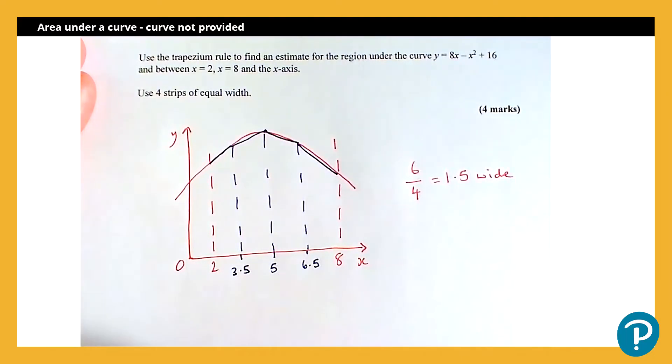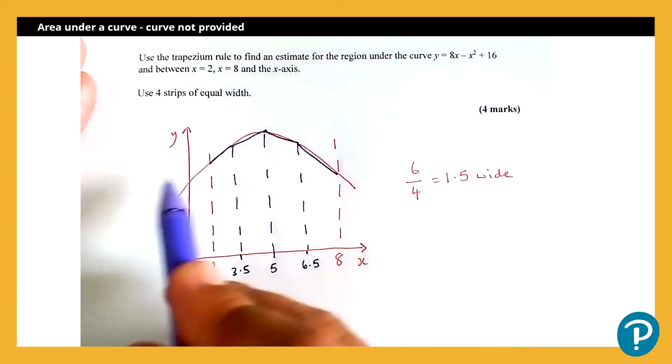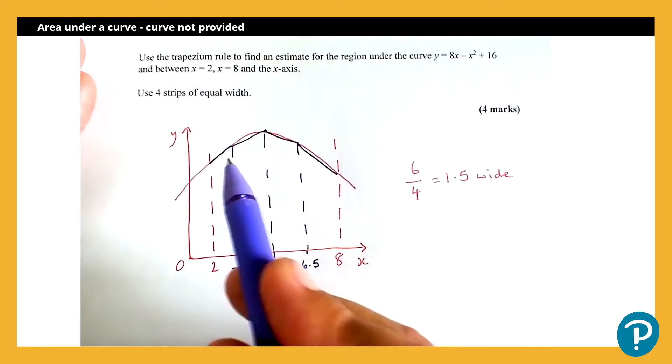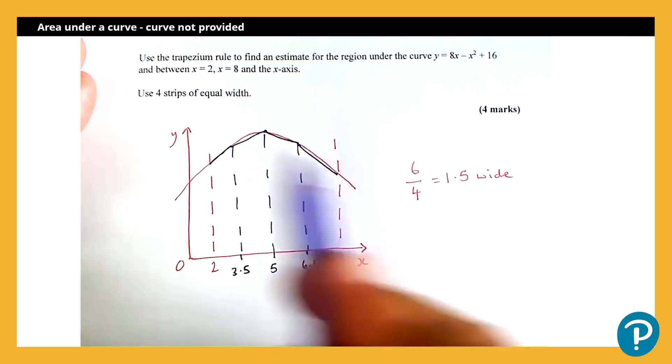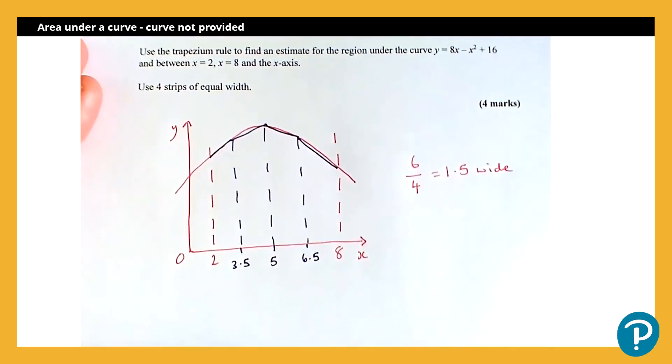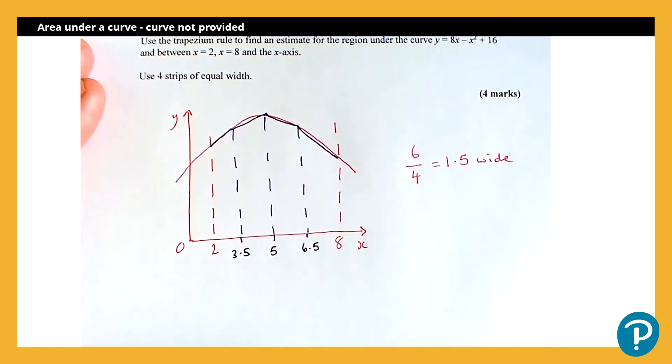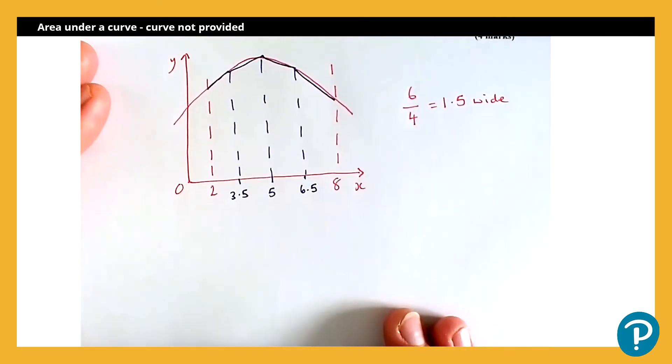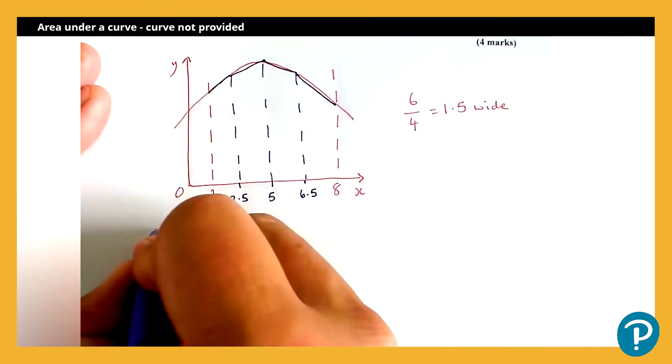Now on GCSE, we would read these values off from a graph. So we'd look up and read across. Here, we can't do that, because we don't have an accurate graph. As you can see, my graph's not entirely accurate. Now what I'm going to do is I'm going to call each of these five values that I'm interested in A, B, C, and D.